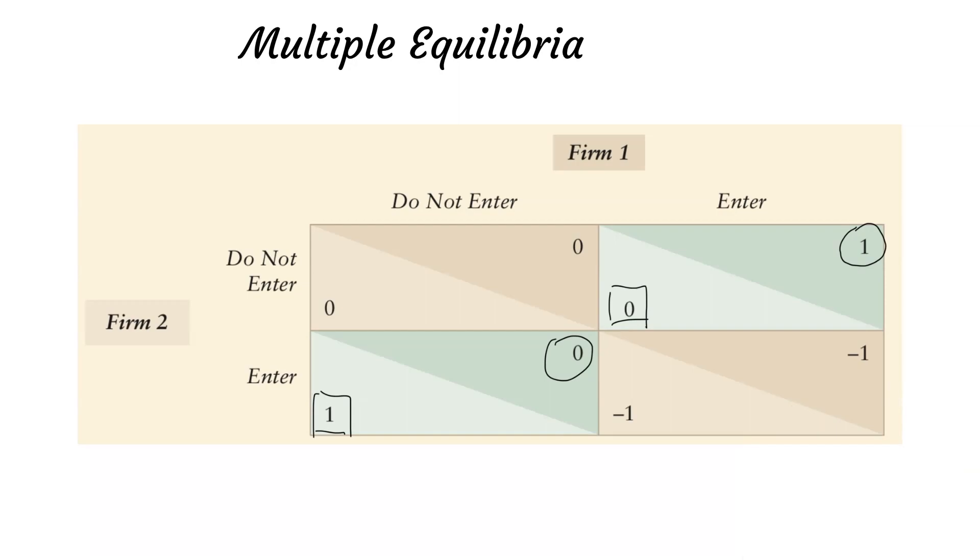Many games have more than one Nash equilibrium. In this entry game, we can identify two Nash equilibria: firm one enters and firm two does not enter, or firm two enters and firm one does not enter. It is a Nash equilibrium because given its rival strategy, neither firm wants to change its behavior or deviate from its strategy.